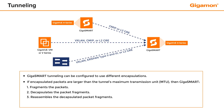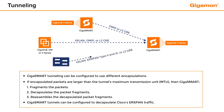At the receiving end, the packets are decapsulated and the tunnel header is removed, and then packet fragments resulting from the tunneling process are reassembled and forwarded to the tool.